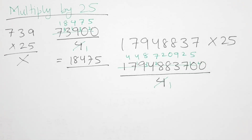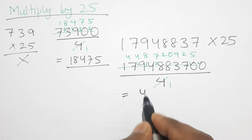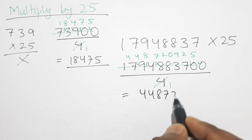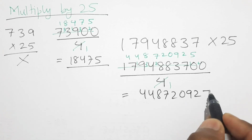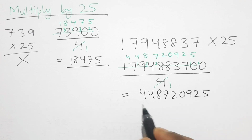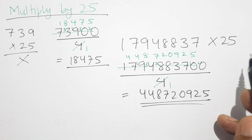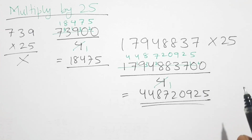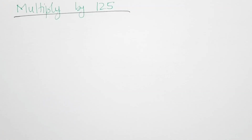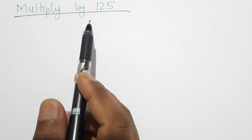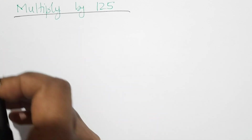The product is 17948720925. In this way we can multiply any number by 25 in a much faster way. Now let's multiply by 125.